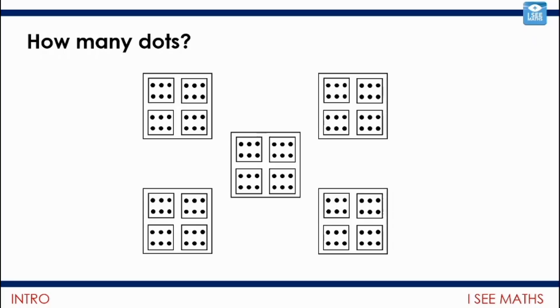Another thing you could do is think, how many dice are there? There's five lots of four dice. So that's 20 dice faces, and six dots on each face. So six times 20, 120. There's another one.